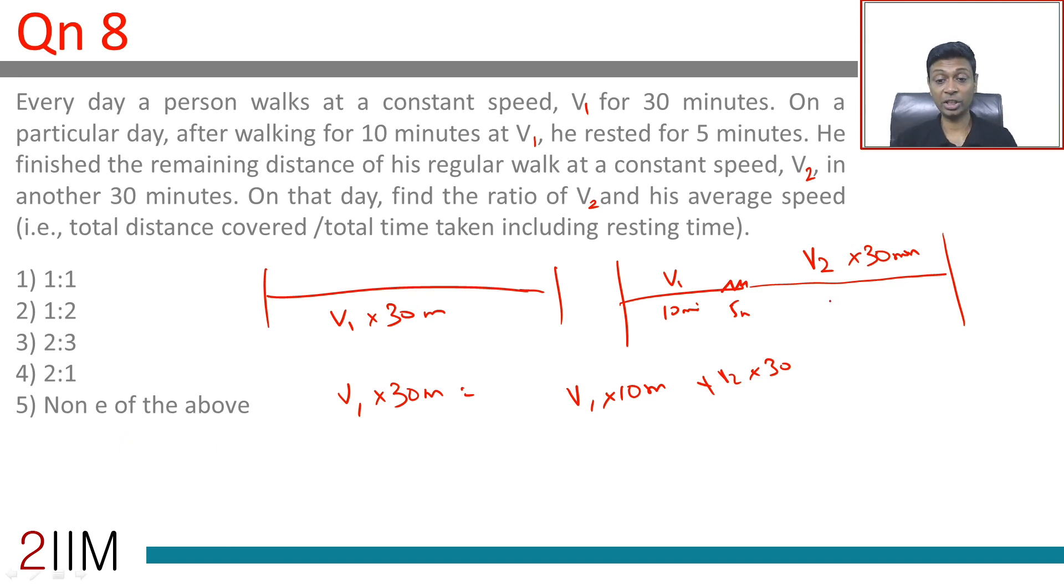So let's think about this: v1 into 30 equals v1 into 10 plus v2 into 30, or v1 into 20 equals v2 into 30, or v1 equals 1.5 v2.